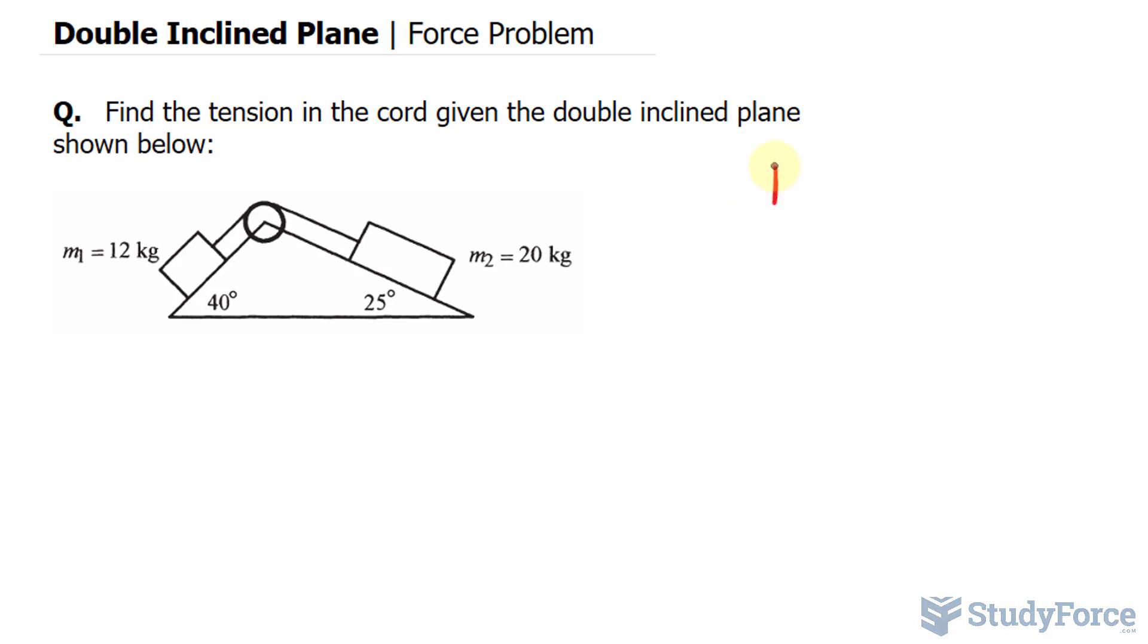They all involve the formula F is equal to ma, that's Newton's second law, where force is equal to the mass times the acceleration. Let's concentrate on mass one first, and then we'll use what we learned about mass one for mass two.